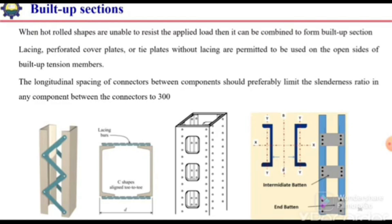When hot rolled shapes are unable to resist the applied load, they can be combined to form a built-up section. For example, if a single channel section is unable to resist the applied load, we can combine two channel sections to form a built-up section.